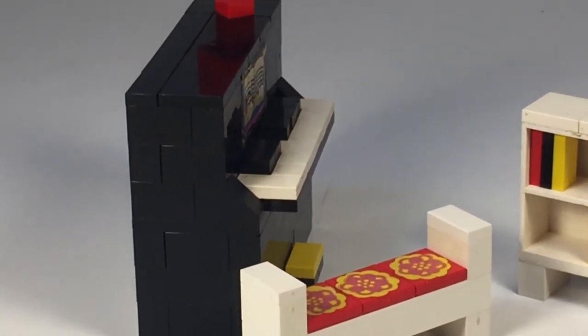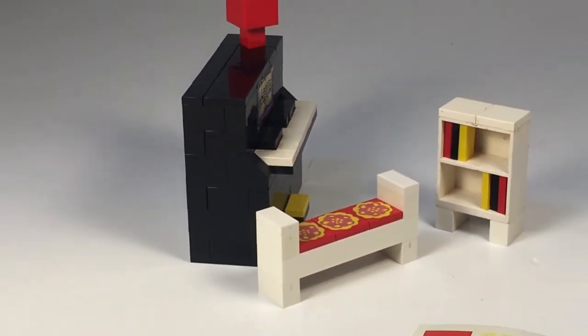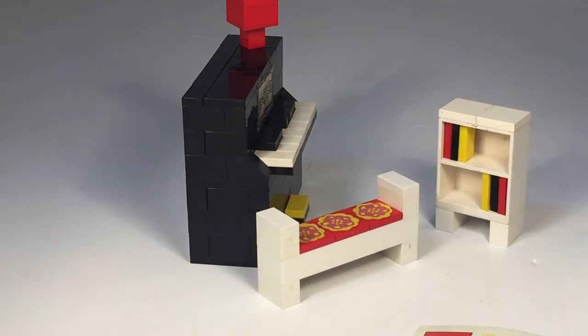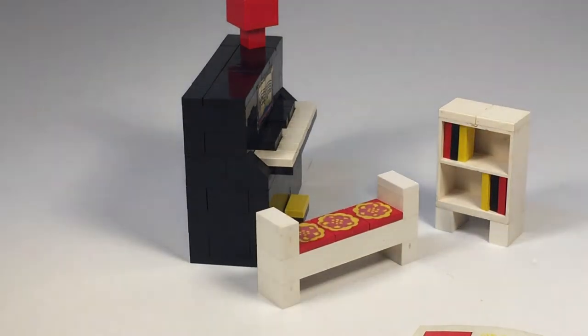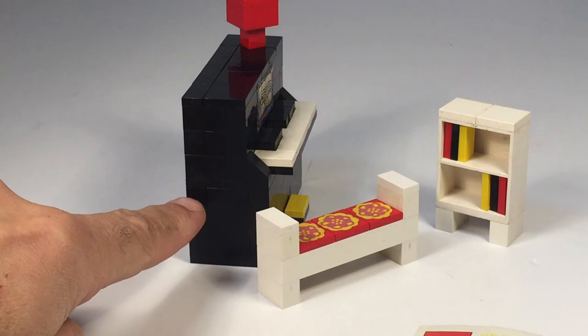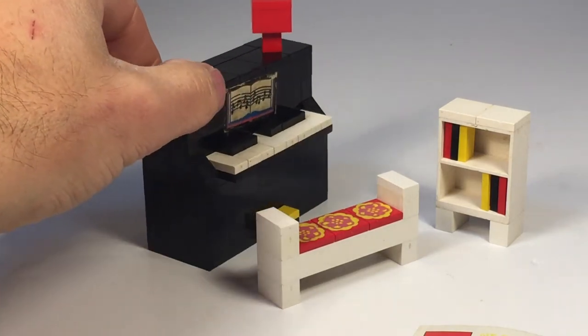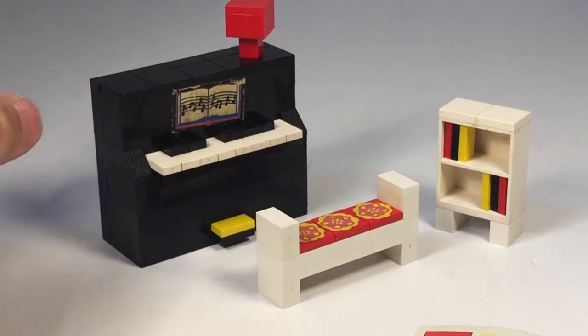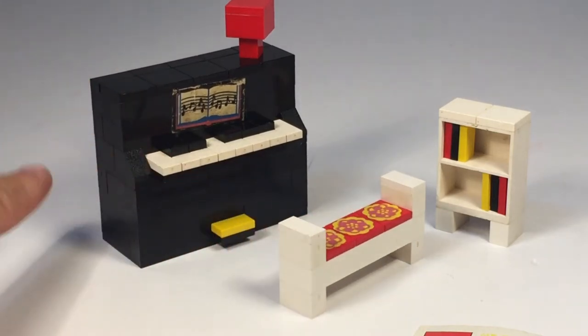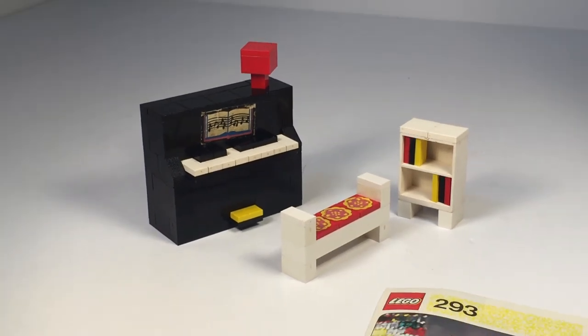I don't know if it's showing up on the camera or not, but that lets you know that the sprue or where they held the brick when they were molding it was on the side. And today it's done on the stud. So you always know you got an older brick if it's got that on the side, cause they haven't done that in a long time.